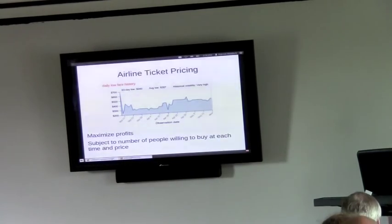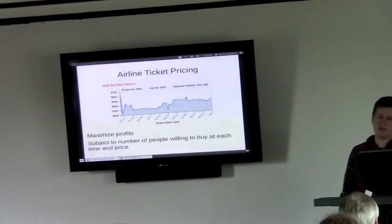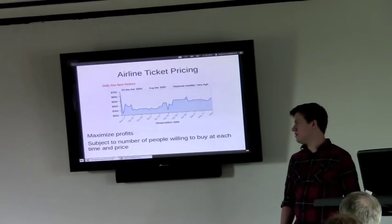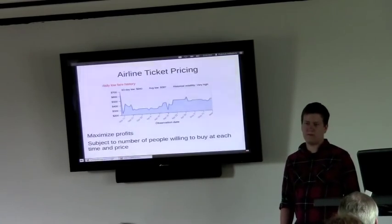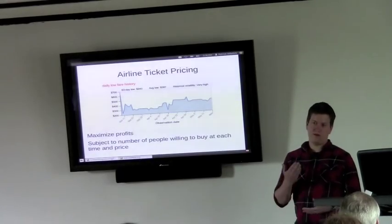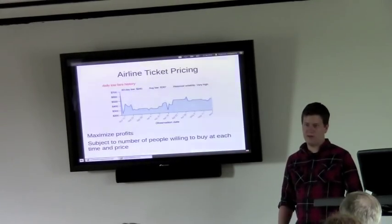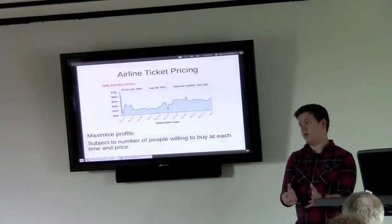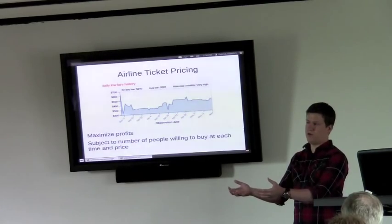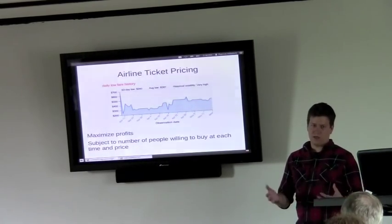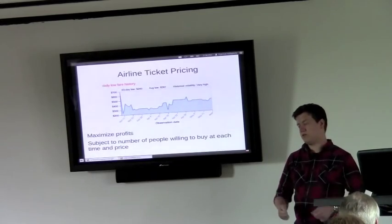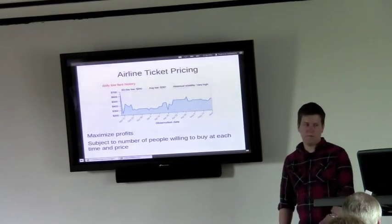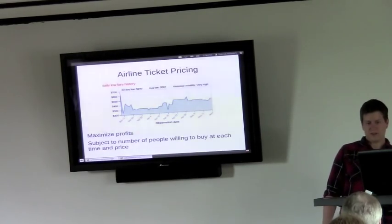So another example is airline ticket pricing, which can be confusing. Basically what airlines do is they engage in price discrimination. A very simple example would be hardcover and softcover books. Publishers put out hardcover books because they know there's some segment of the market that will pay more to get the book early, right when it gets published. And then after they capture that segment, they put out the softcover book, which more people will buy because it's cheaper.